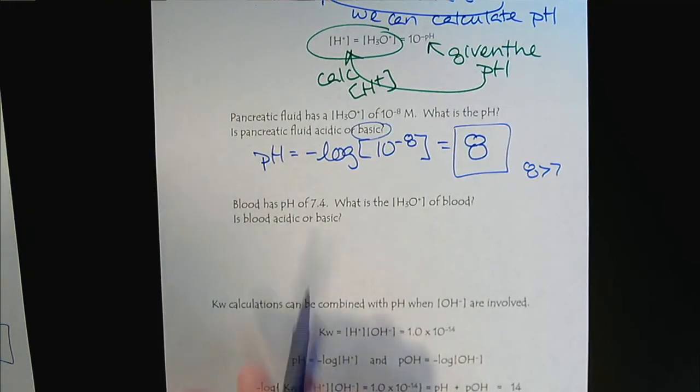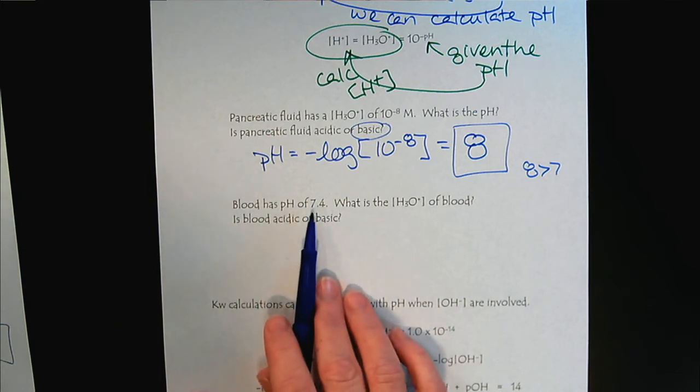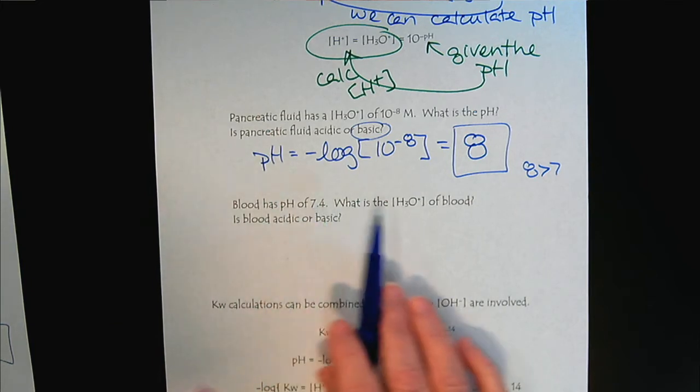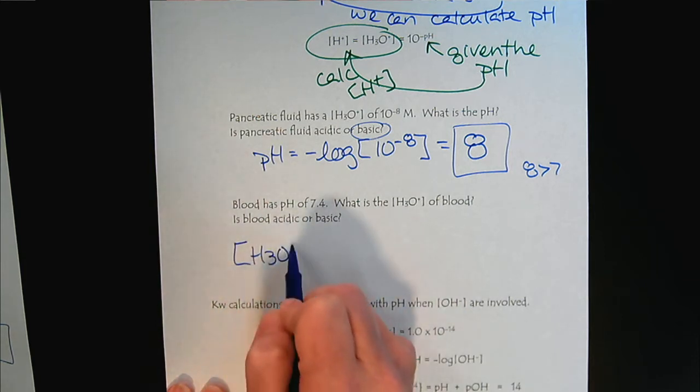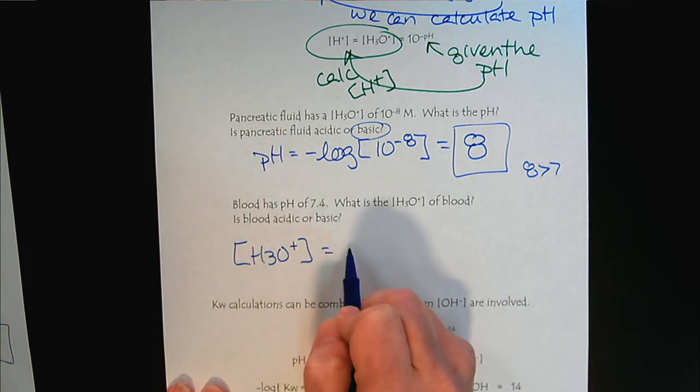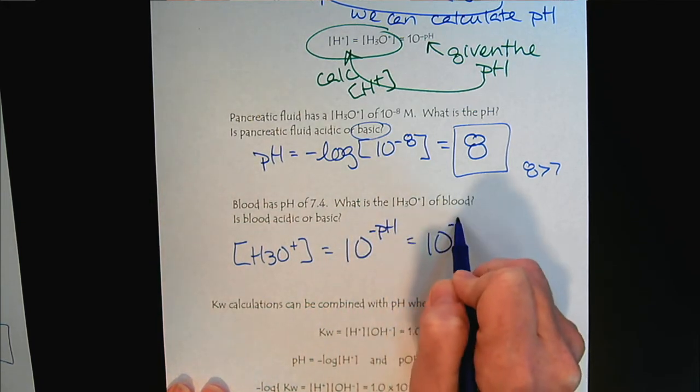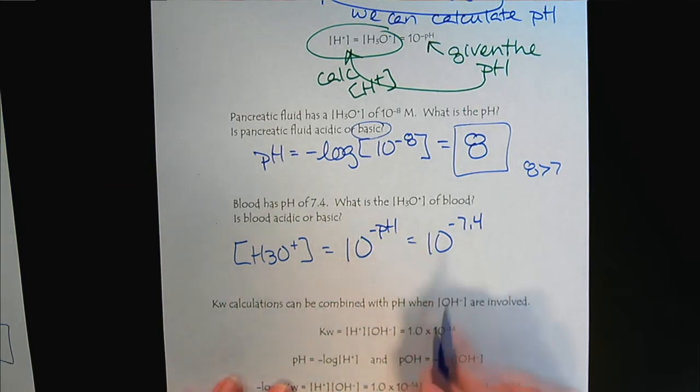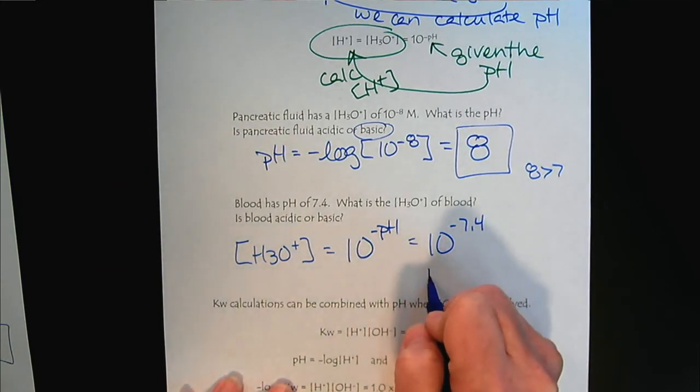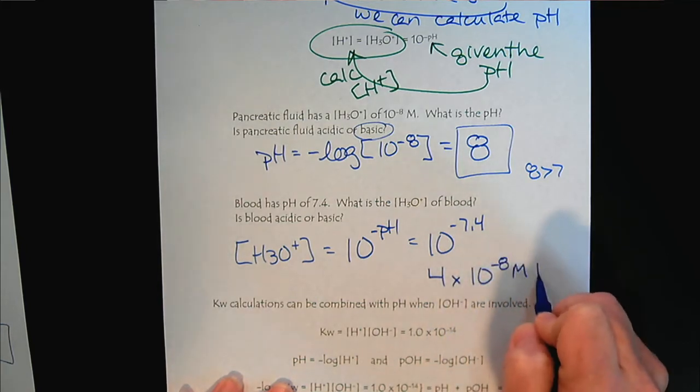Our blood ideally has a pH of 7.4. So now in this example, we were given the pH and asked to calculate the hydronium ion concentration. So H3O+ is going to be 10 to the minus pH, which will be 10 to the minus 7.4. So here you can use your carat symbol on your calculator. And the calculator will tell you that we would get 4 times 10 to the minus 8 molar H+.